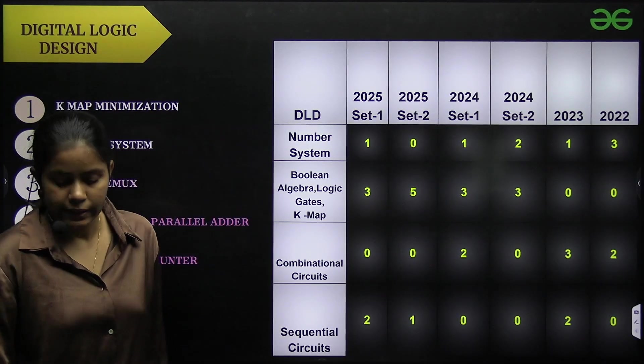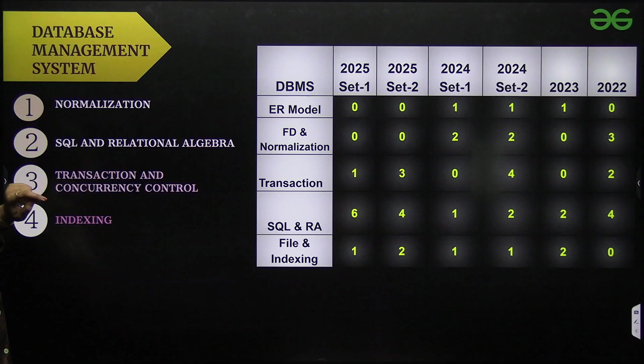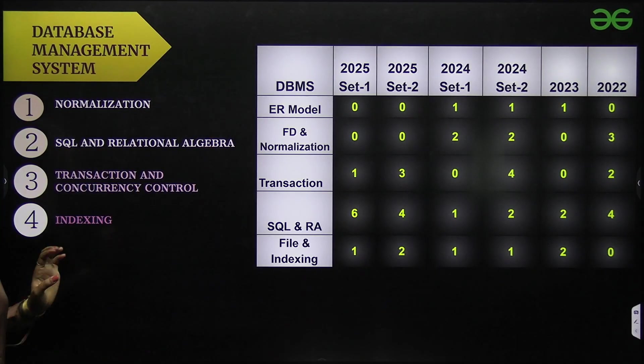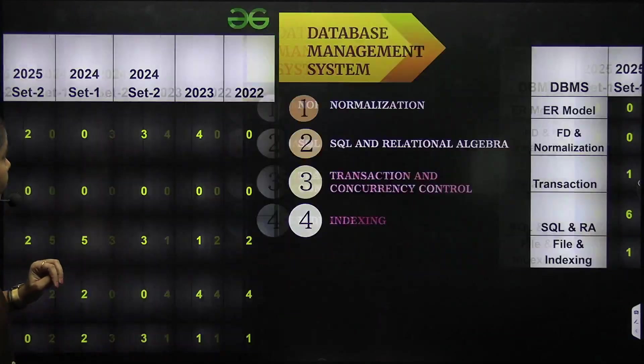Next we have database management system. In this we have normalization, SQL and relational algebra, transaction and concurrency control, and indexing. So these four topics are important and again there is the weightage.